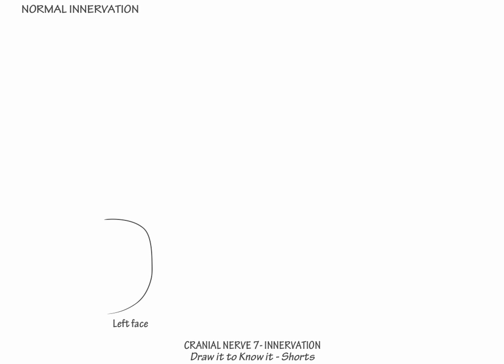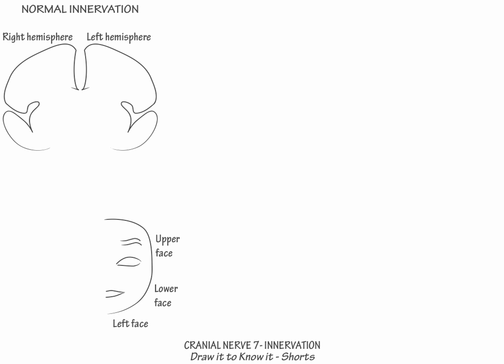Draw the left half of a face and label its upper and lower parts. Then draw the bilateral cerebral hemispheres. Next, draw the left facial nucleus and divide it into its upper and lower divisions, which innervate the upper and lower face, respectively.